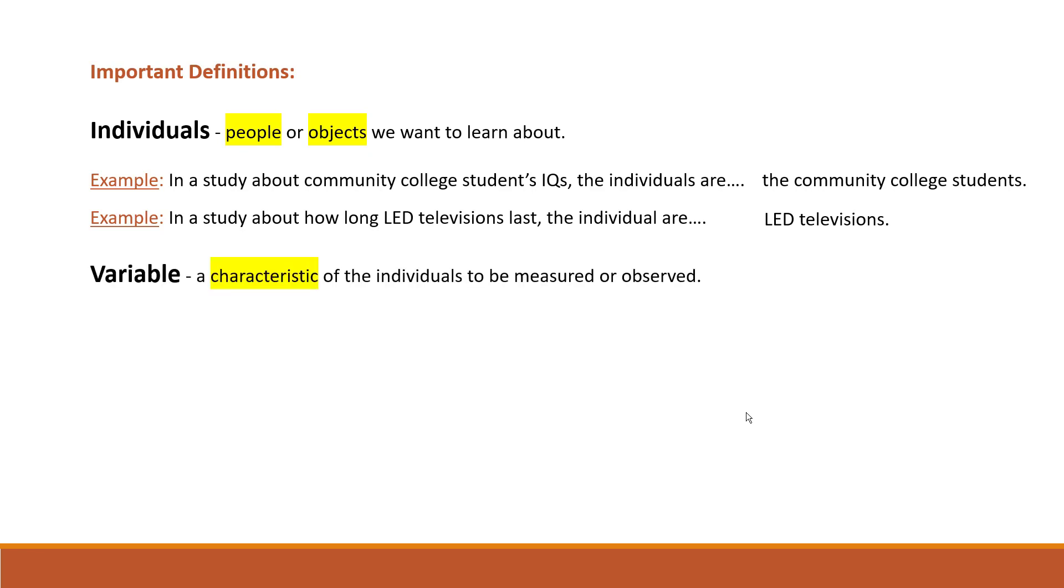Next term is the variable. Variable is a characteristic of the individuals to be measured or observed. You probably know this word from mathematics. We use variables in math. X, Y, these are the variables. Why do we call them variables in mathematics? Well, because they can take different values, right? They vary. X can be equal to 5 or it can be equal to 7. Similar idea here about characteristic of the individuals.